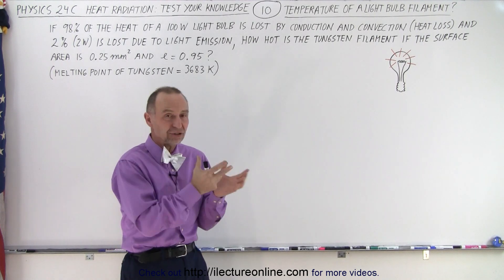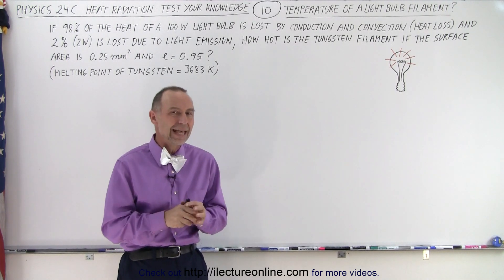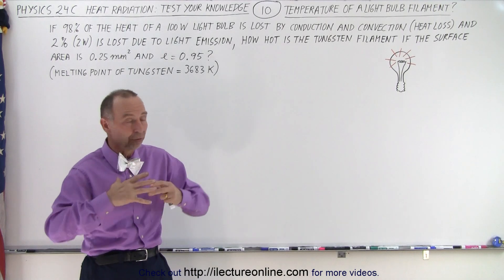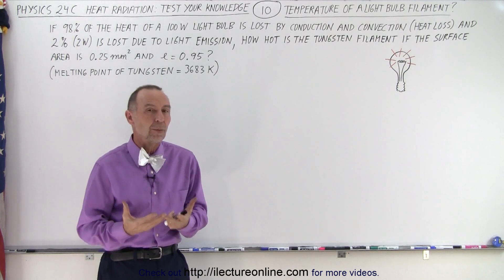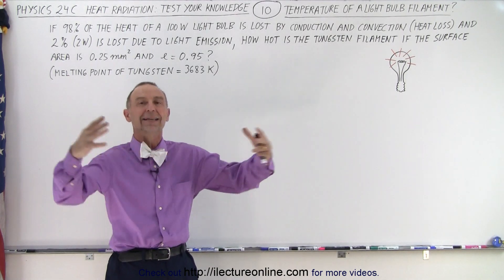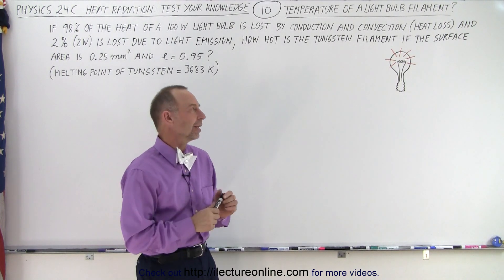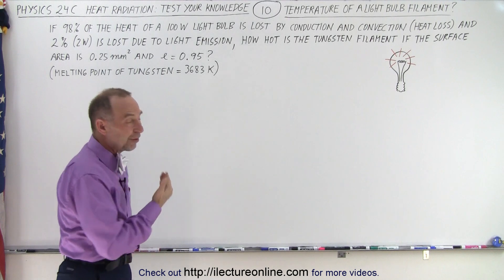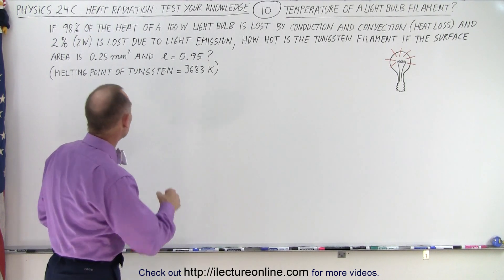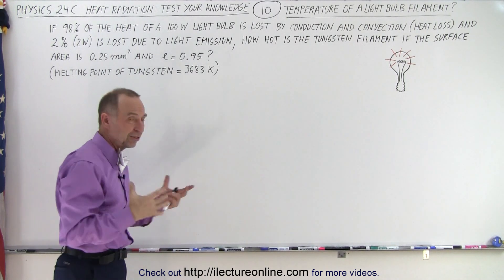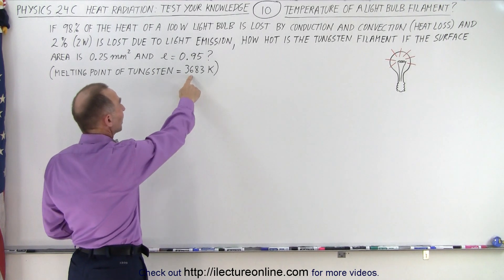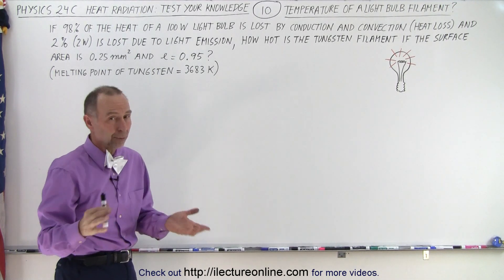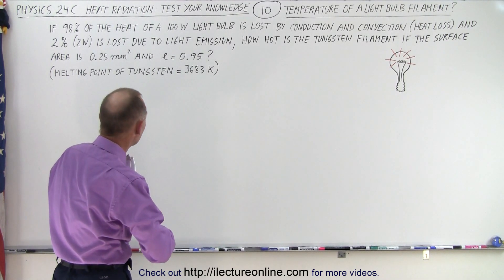It was lost to convection and conduction of heat, and only a very small percentage of the total output of the light bulb was actually turned into light that was emitted from the filament. So in order to withstand the very high temperatures of the filament, they used to be made of tungsten because the melting point of tungsten is pretty high: 3683 degrees Kelvin.